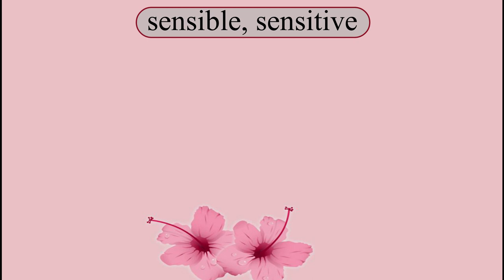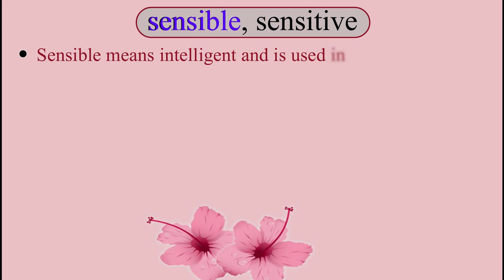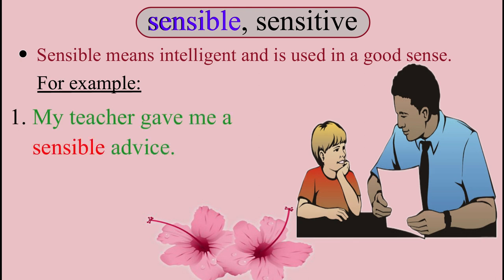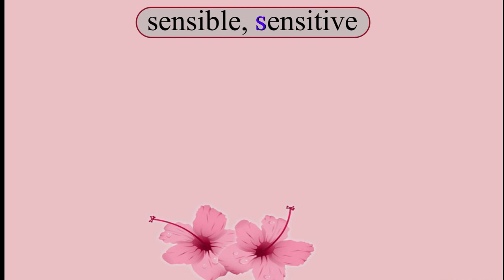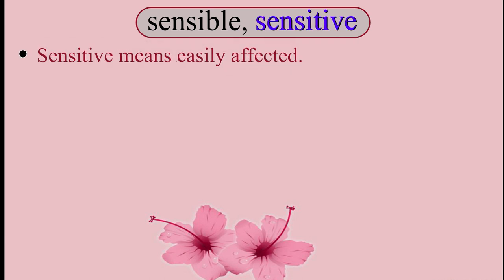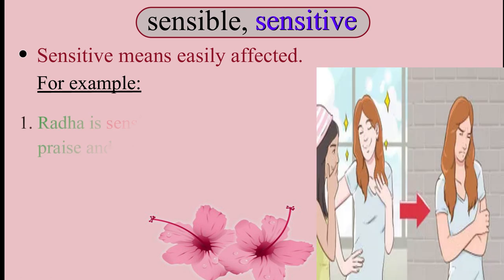The next pair of words is 'sensible' and 'sensitive'. Sensible means intelligent and is used in a good sense. For example: 'My teacher gave me sensible advice.' Whereas, sensitive means easily affected. For example: 'Radha is sensitive to both praise and blame.'